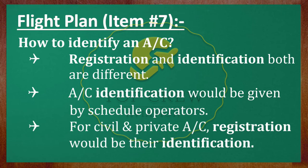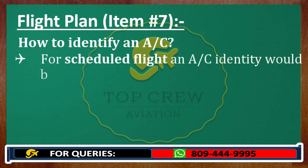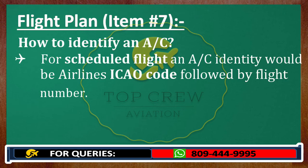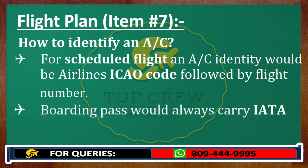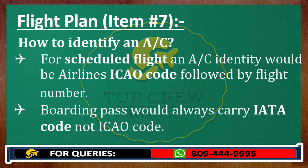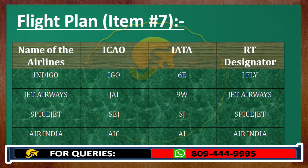If we have any personal aircraft, civil aircraft, or general aviation aircraft, their identification would be their registration number only. For a scheduled flight, an aircraft identity would be the airline's ICAO code followed by the flight number. Remember: the boarding pass would always carry the IATA code, not the ICAO code. Do not get confused between ICAO codes and IATA codes. For example, the name of the airline is IndiGo, the ICAO code is IGO, the IATA code is 6E, and the IATA designator for IndiGo is IFLY.